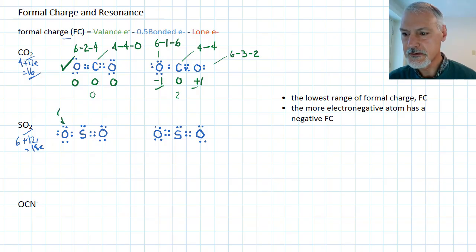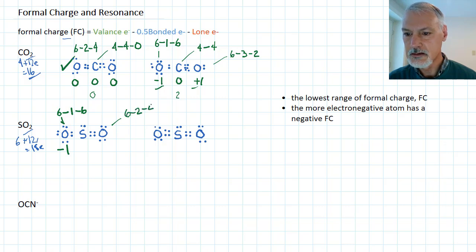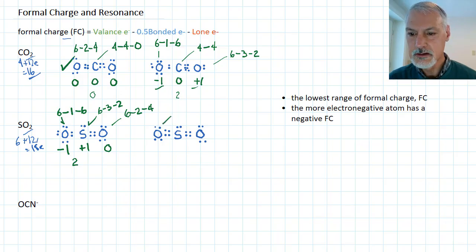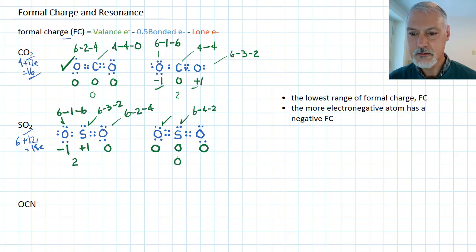In the first SO₂ structure, the oxygen with a single bond has six valence electrons; with two electrons involved in a bond, half of that is one, and there are six lone electrons — giving minus one. The other terminal oxygen similarly gives minus one. The sulfur in the middle: six valence electrons, minus half the bonded electrons, minus the lone pairs, gives a plus one. So the range goes from minus one to plus one — a range of two. In the expanded-octet structure, both oxygens each have a formal charge of zero. The sulfur has six valence electrons, less half of eight bonded, less two lone electrons — giving zero. This structure has a range of zero, making it the preferred structure — sulfur with the expanded octet. We always look for the structure with the lowest range of formal charge.